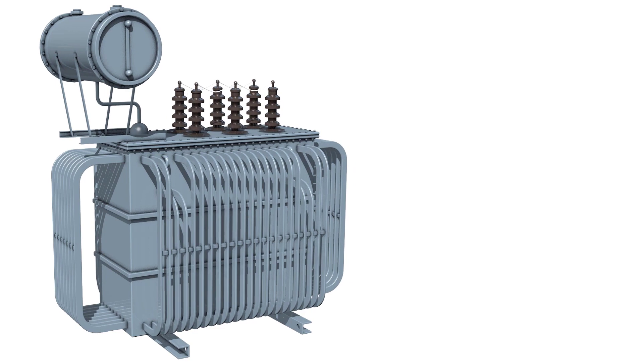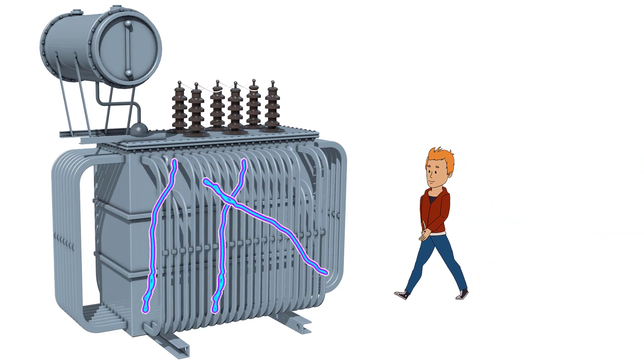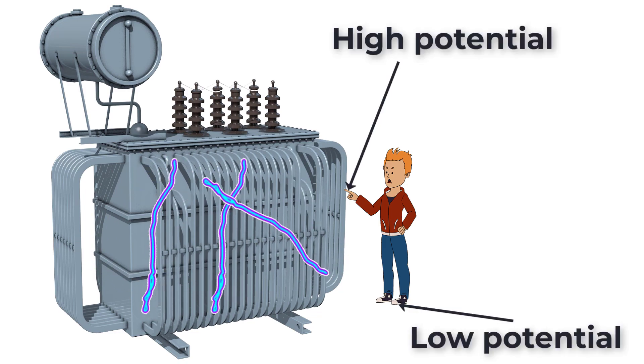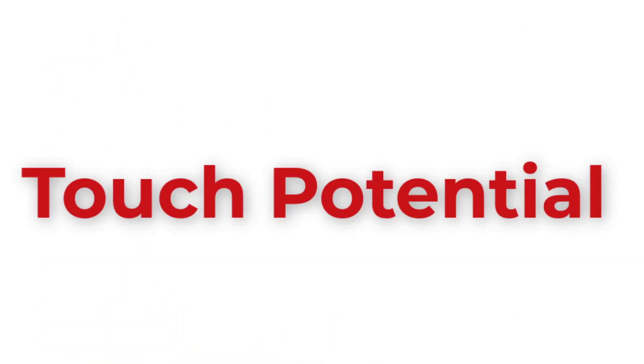Let's assume that there is a destruction in insulation of power transformers. The body becomes in contact with phases. The body of transformer will be energized. Touching the body of transformer will cause a potential difference between hand and leg, which will force current to travel through the body. This phenomenon is called touch potential.